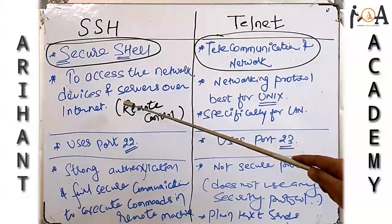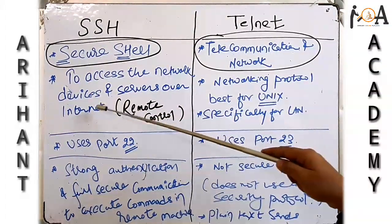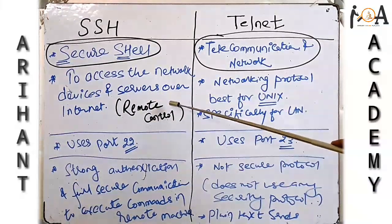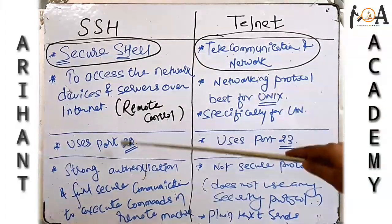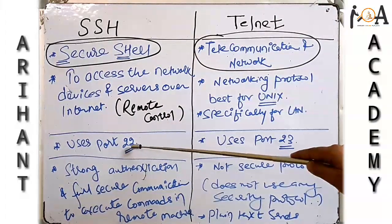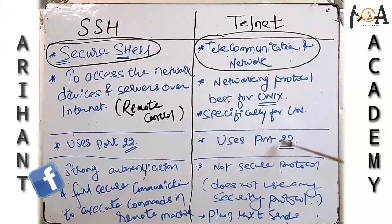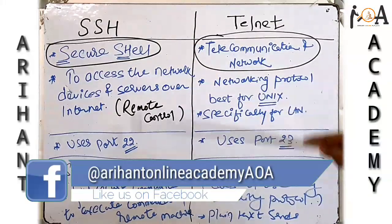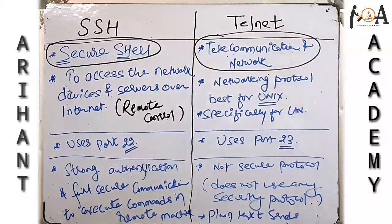SSH is for the complete internet network where a device might be at a different location and for remote control of any machine. SSH uses port number 22 by default, whereas Telnet uses port number 23.